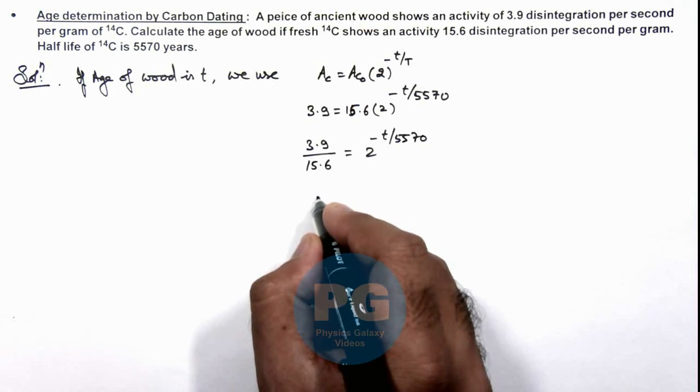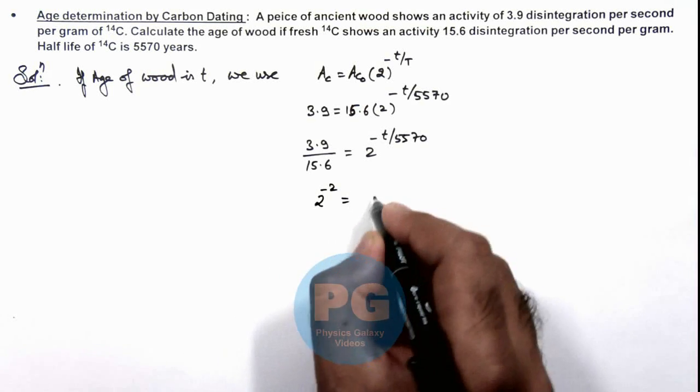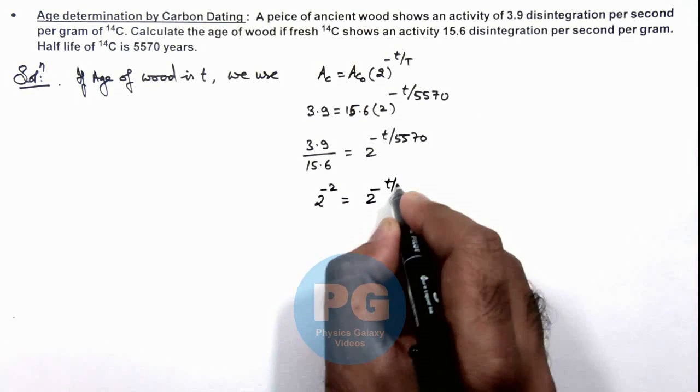So this is 2 to power minus 2 is equal to 2 to power minus t by 5570.